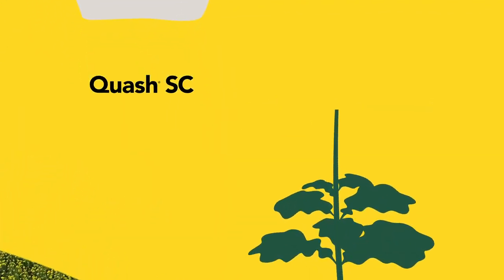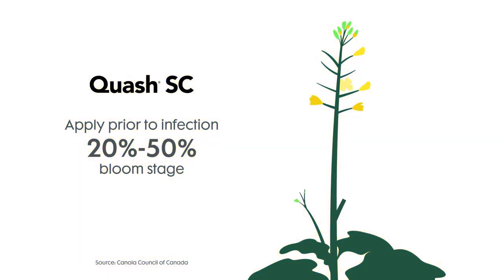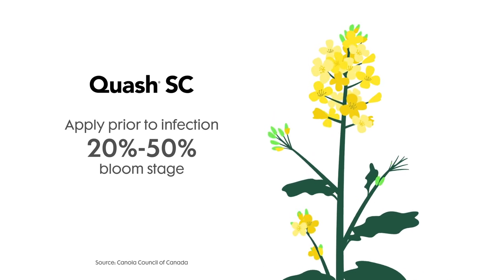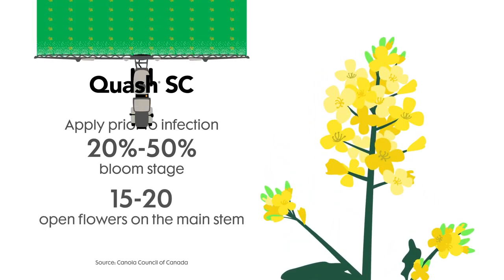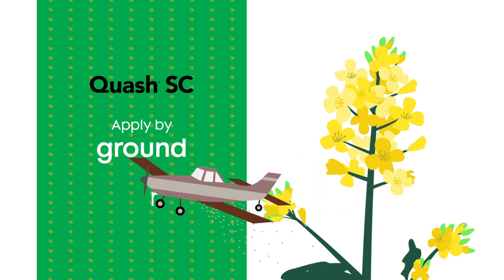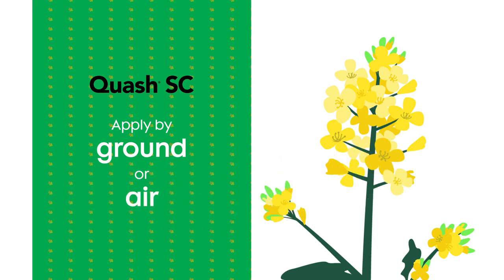Quash works best applied at the 20 to 50% bloom stage prior to disease development. Just look for 15 to 20 open flowers on the main stem. Apply by ground or air prior to infection for preventative control.